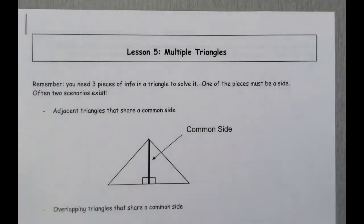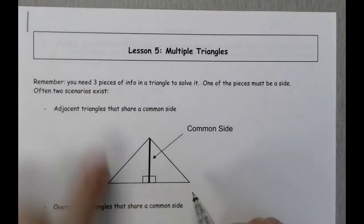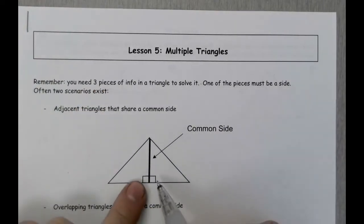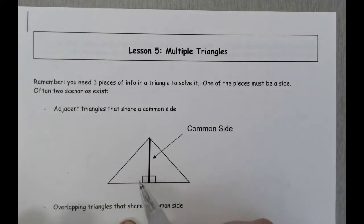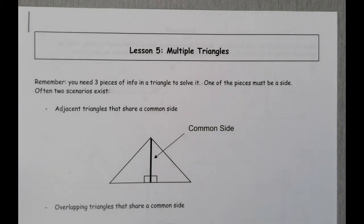First of all, remember that to solve a triangle, you need three bits of information. One of those bits of information is going to be knowing that it's a right angle triangle. That's convenient. And then we need two other bits of information in order to find any part that we want.